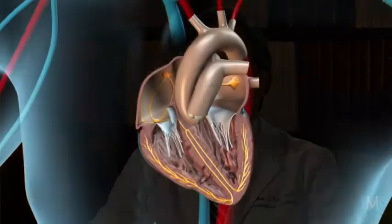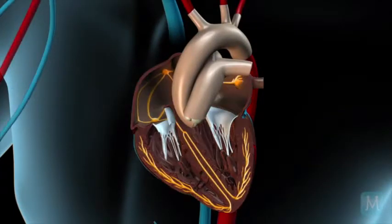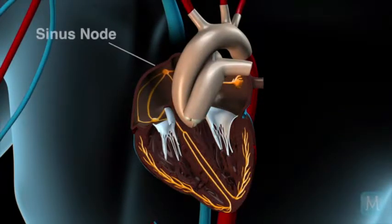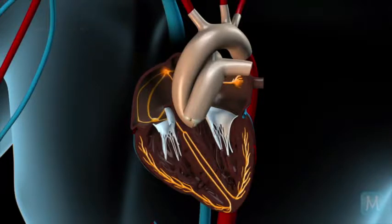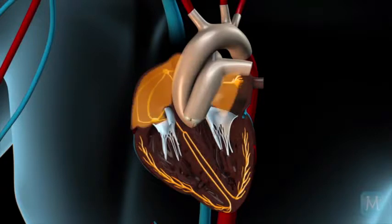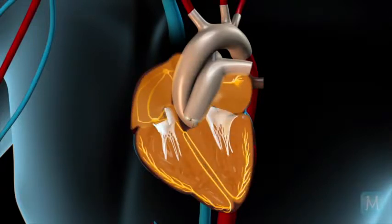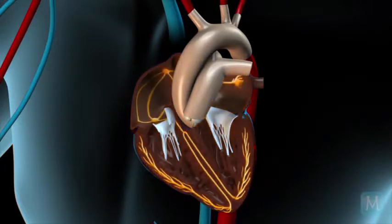The electrical system of the heart starts with the pacemaker of the heart. We are all born with one. It's called a sinus node, or SA node. It's located in the upper right chamber of the heart. The heart has four chambers: the right atrium, left atrium, right ventricle, and left ventricle. In the upper right hand corner of the right atrium is where the sinus node is situated.